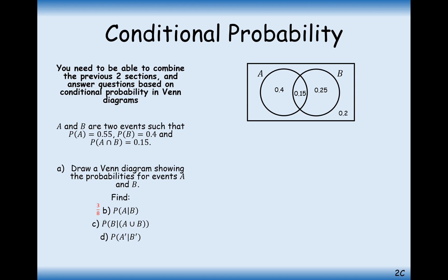Moving to part C: find the probability that B is true given that either A or B is true. The condition tells us that either A or B is true, so the only region we can exclude is the 0.2 outside both circles. The denominator is the sum of all three regions inside the circles. The probability of B — the whole B circle — is 0.4, so the answer is 0.4 divided by 0.8, which is 0.5.